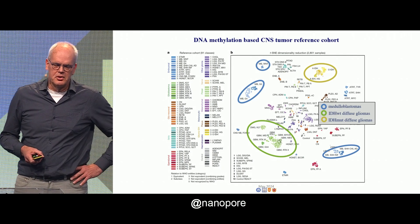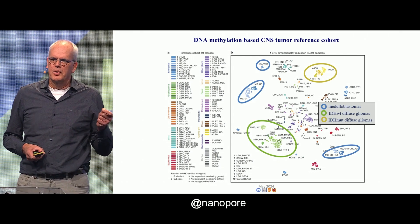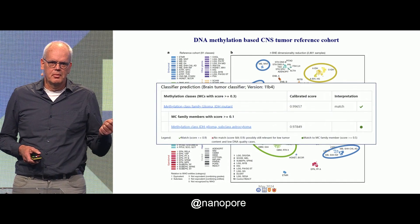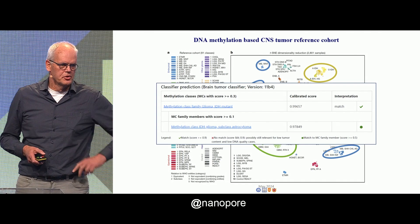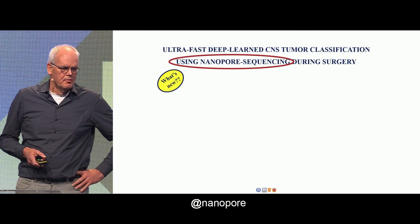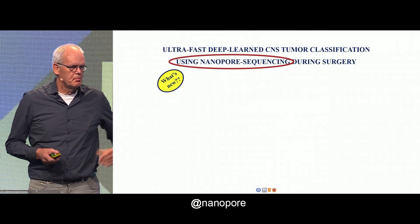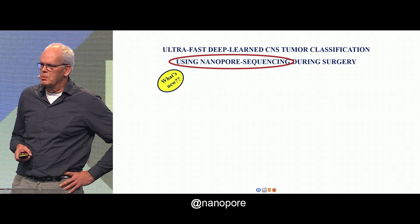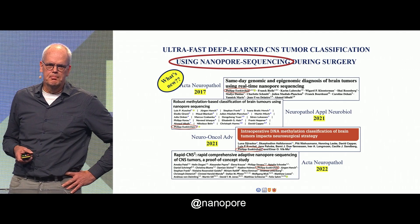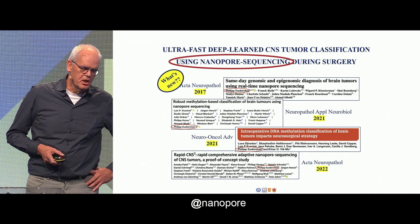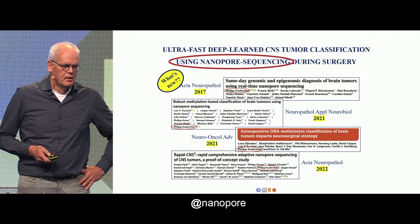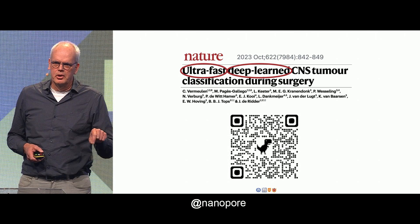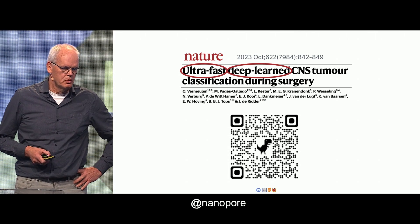Methylation profiling helps to make a diagnosis even without looking through the microscope. Most of the time, this methylation profiling analysis is on target. Now, about the work I'm going to present here using nanopore sequencing — what's new, you could say, because there have already been publications before. What's new is that it is ultra-fast and deep-learned, which is what our group was working on.